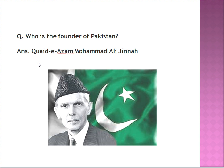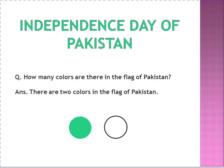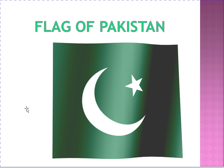Say after me: Quaid-e-Azam Muhammad Ali Jinnah. Again, say with me: Quaid-e-Azam Muhammad Ali Jinnah. How many colours are there in the flag of Pakistan? Raise your two fingers and tell me. There are two colours in the flag of Pakistan — white and green.